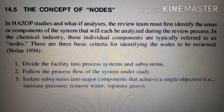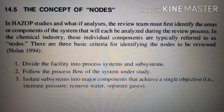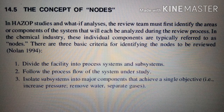The concept of nodes: in HAZOP studies and What-If Analysis, the review team must first identify the areas or components of the system that will each be analyzed during the review process. In the chemical industry, these individual components are typically referred to as nodes. There are three basic criteria for identifying nodes to be reviewed: first, divide the facility into process systems and subsystems; second, follow the process flow of the system under study; third, isolate subsystems into major components that achieve a single objective, such as increasing pressure, removing water, or separating gases.